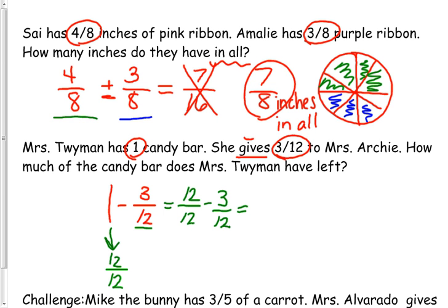And that equals 9/12. So Ms. Twyman has 9/12 of the candy bar left.